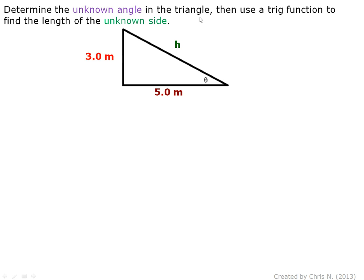Determine the unknown angle in the triangle, then use a trig function to find the length of the unknown side. In this right triangle, two sides are known: 3.0 meters is opposite to angle theta, and 5.0 meters is adjacent to angle theta. We will use the tangent ratio to solve for the unknown angle because it relates opposite to adjacent.